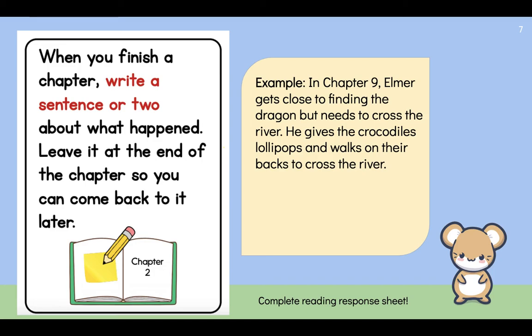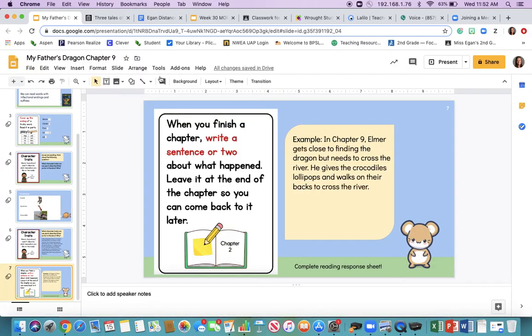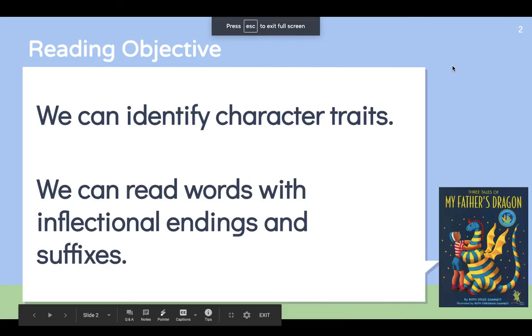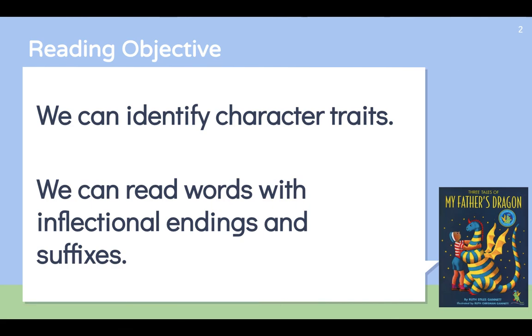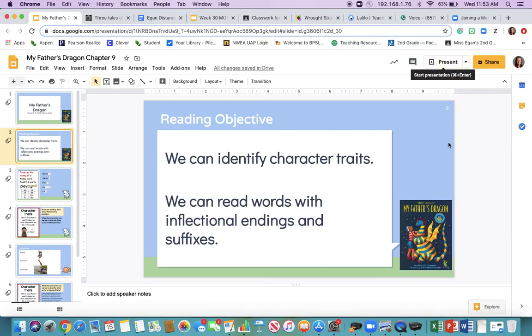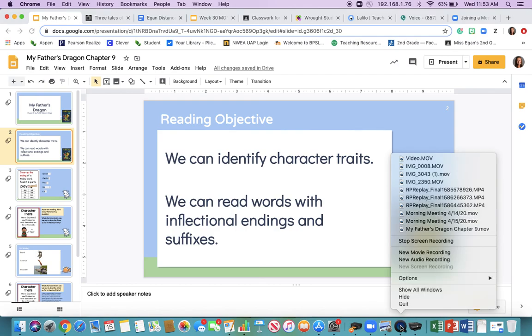Now all you have left to do, students, is complete your reading response sheet for today. Let's go back to our objectives. We don't have comprehension questions today since we did have two objectives. Today we learned that we can identify character traits and that we can read words with inflectional endings and suffixes. Good readers continue to do this in their own reading, not just during My Father's Dragon. Make sure you're doing that today and throughout the rest of the week. I'm looking forward to reading chapter 10 with you — see you next time.